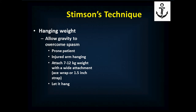Stimson's technique is great because you don't need anyone else to help you. Allow the patient to lie prone on an elevated table with the injured arm hanging over the edge. Attach a 7 to 12 kilogram weight to their arm at about wrist level using a wide attachment — a wide ace wrap hitch or inch-and-a-half strap — so it's not cutting into the wrist. The weight should hang maybe 6 to 8 inches off the ground. Let it hang — the patient cannot hold onto it because their hand muscles will fatigue before their shoulder muscles. Eventually, 20 minutes to half an hour, it will reduce. Giving 5 milligrams of IV or IM morphine beforehand may speed the process.